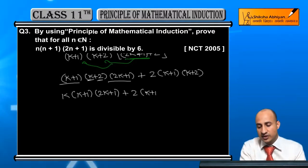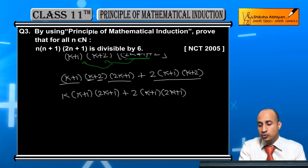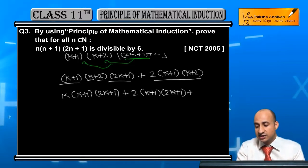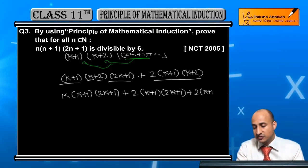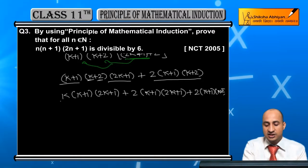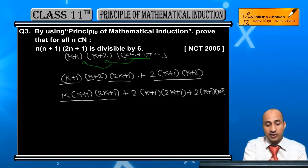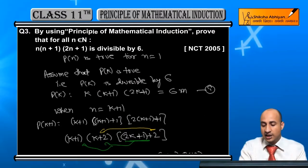And then when I multiply by 2, I will get 2 into K plus 1 into 2K plus 1. Further, 2 into K plus 1, K plus 2 as it is. So 2 into K plus 1 into K plus 2 as it is.